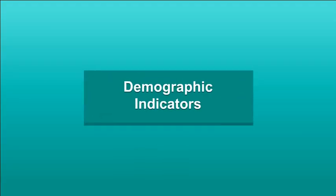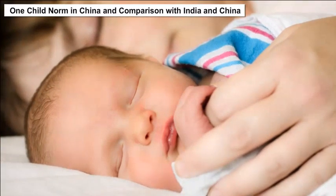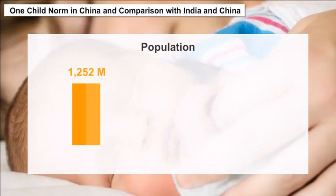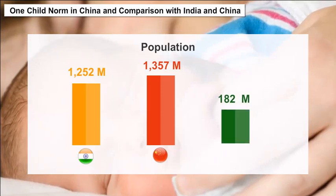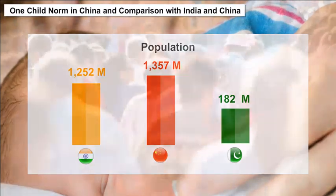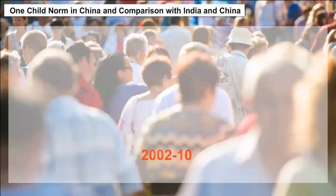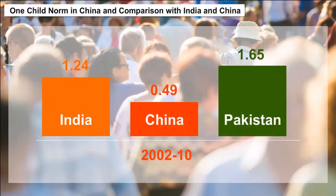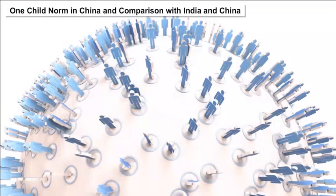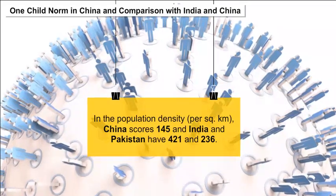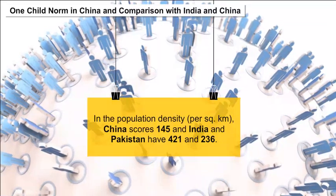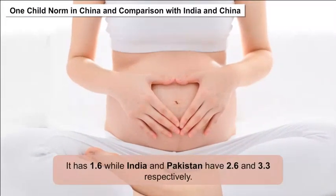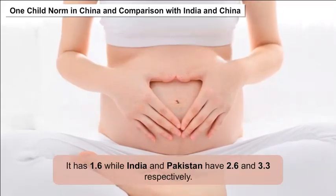Demographic Indicators — One Child Norm in China and Comparison with India and Pakistan: The estimated population is 1,252 million in India, 1,357 million in China, and 182 million in Pakistan. The annual population growth rate between 2002 and 2010 was 1.24% in India, 0.49% in China, and 1.65% in Pakistan. In population density per square kilometer, China scores 145, while India and Pakistan have 421 and 236 respectively. China also controlled its fertility rate to 1.6, while India and Pakistan have 2.6 and 3.3 respectively.